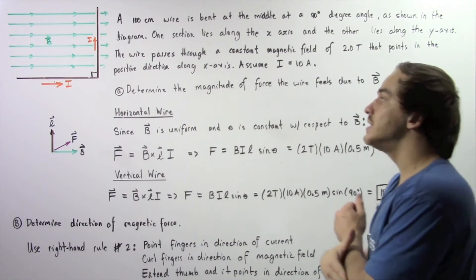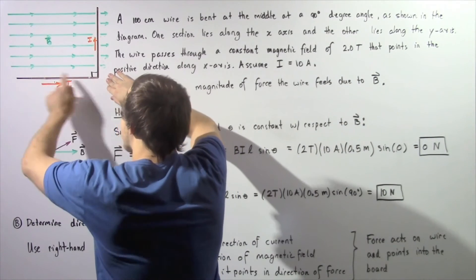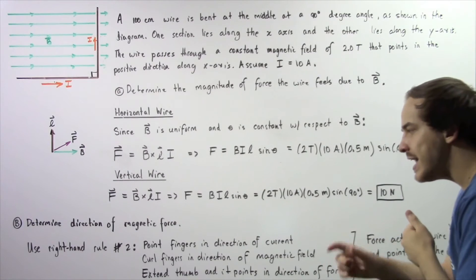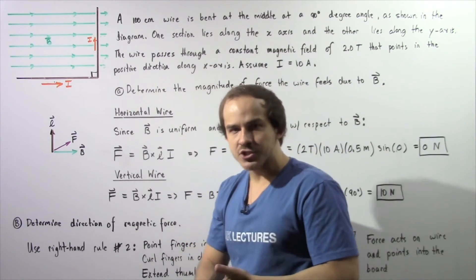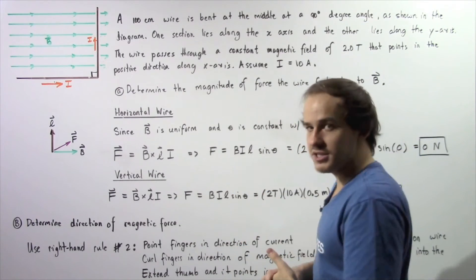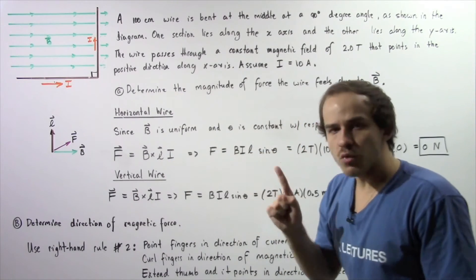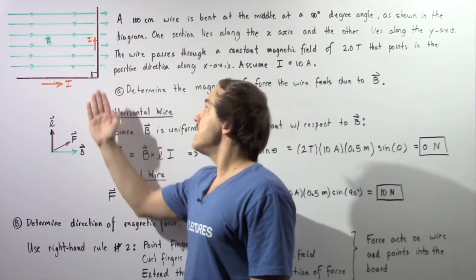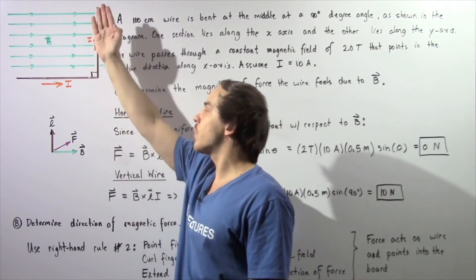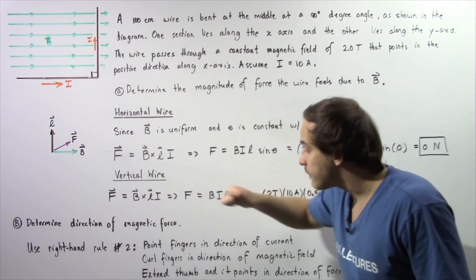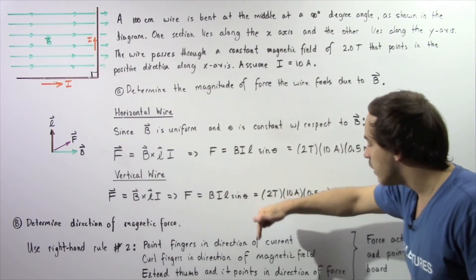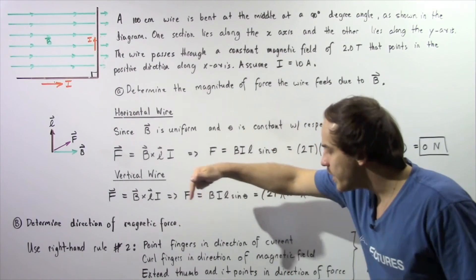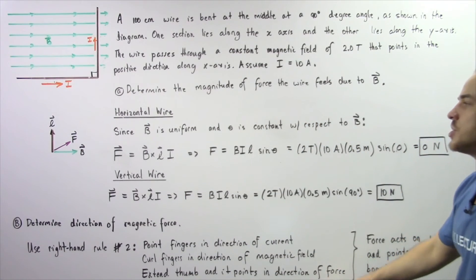In part B, we determine the direction of the force. The horizontal section has no force, so we only examine the vertical section. We apply the right-hand rule. Step one: take the right hand and point the fingers in the direction of the electric current — upward along the y-axis. Step two: curl the fingers in the direction of the magnetic field. Step three: extend the thumb, which will point in the direction of the magnetic force.